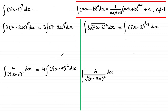Let's take the first example: 5x minus 1 all to the power 3. Using the formula, we write 5x minus 1 to the power 3 add 1, which is 4. Then we divide by 4 times the value in front of x — 4 times 5 is 20. So we get 1 twentieth times 5x minus 1 to the power 4, plus c.